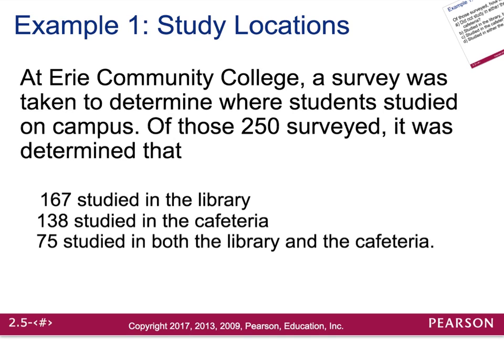At Erie Community College, a survey was taken to determine where students studied on campus. Of those 250 surveyed, it was determined that 167 studied in the library, 138 studied in the cafeteria, and 75 studied in both the library and the cafeteria. The first thing we need to do is develop a Venn diagram.